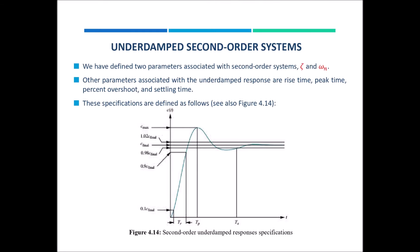In the previous lecture we had a discussion on two different parameters: damping ratio and natural frequency, zeta and omega n. We said that there will be some more parameters associated with underdamped second order systems. The underdamped response is associated with rise time, peak time, percent overshoot, and settling time, which can be seen from figure 4.14. We will be discussing these parameters in detail in the upcoming slides.